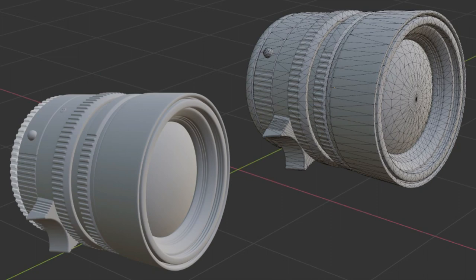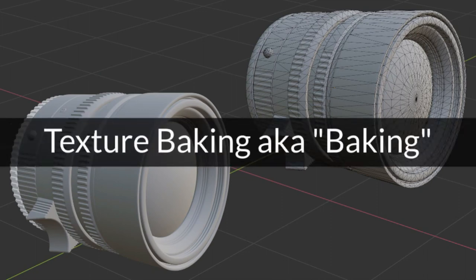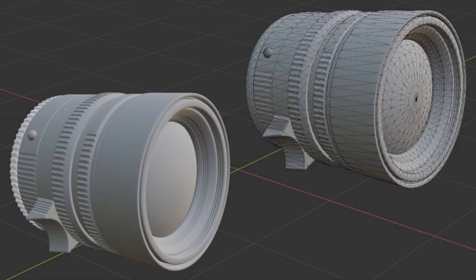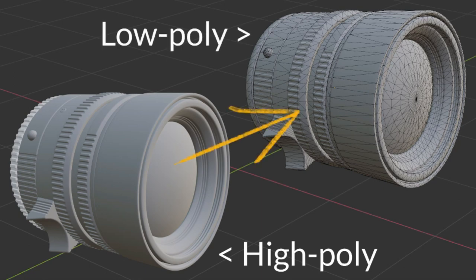We still have a way to capture and display those high quality details while using a game-optimized mesh. Texture baking, commonly referred to simply as baking, is a method of extracting or transferring information from one model to another. More often than not, this process is used for transferring higher poly surface information to a lower poly game asset.